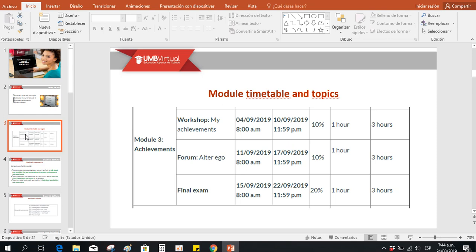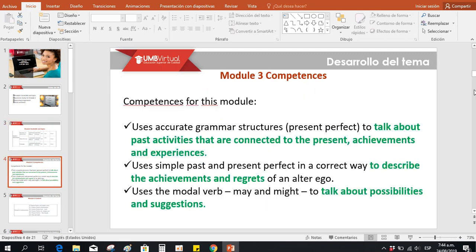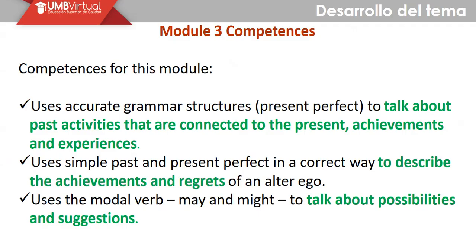Module timetable and topics — those are the following days which you're supposed to start working with your different activities in order to submit them. For module three competences, we are going to see the following information. The first competence: uses accurate grammar structures — present perfect — to talk about past activities that are connected to the present, achievements and experiences.